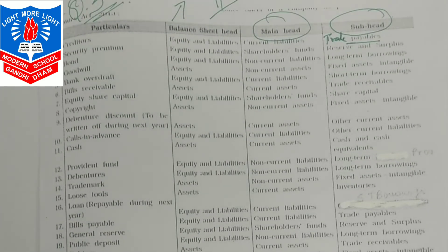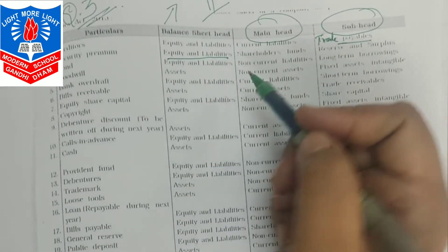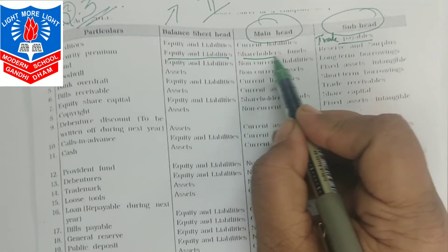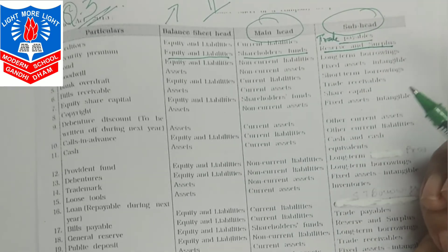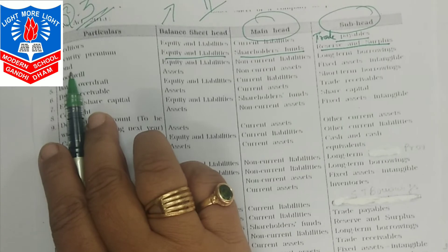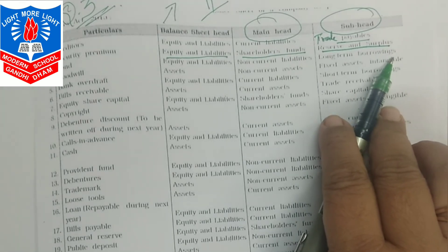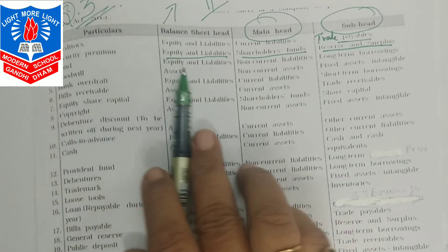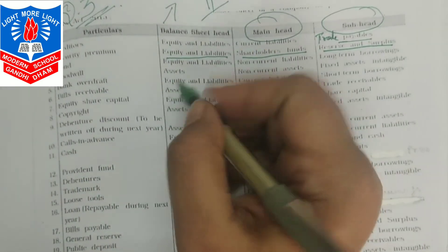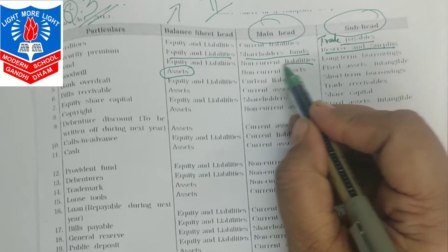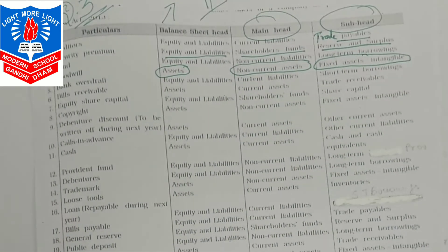Bond: equity and liabilities, non-current liability, long-term borrowings. Goodwill: it is an asset — non-current asset — fixed asset — intangible in nature. Bank overdraft: equity and liabilities side — current in nature — current liability — sub-head is short-term borrowings. Bills receivable: asset side — current asset — sub-head is trade receivables.